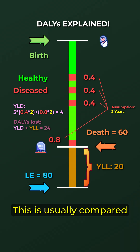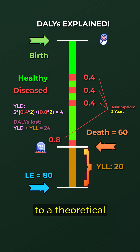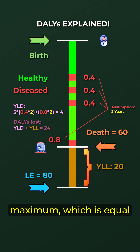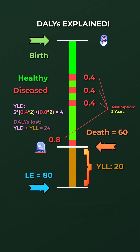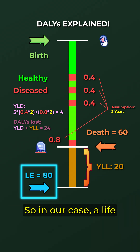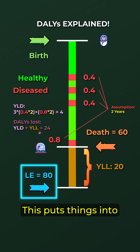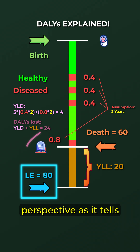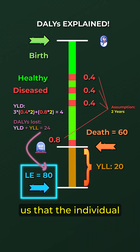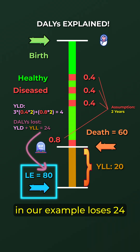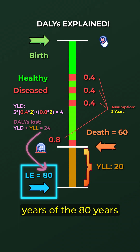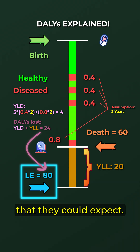So we end up with a total of 24 DALYs lost. This is usually compared to a theoretical maximum, which is equal to the life expectancy. So in our case, a life lived for 80 years in perfect health. This puts things into perspective, as it tells us that the individual in our example loses 24 years of the 80 years that they could expect.